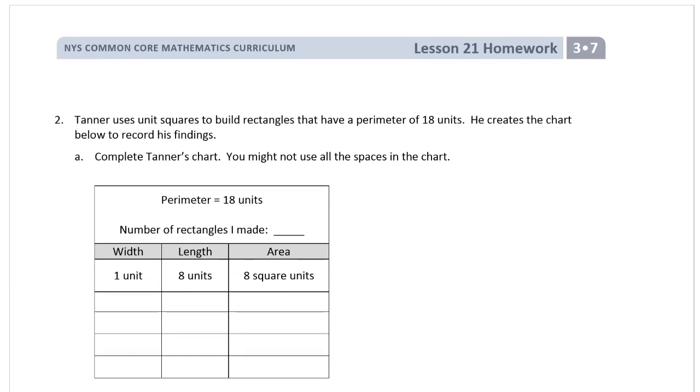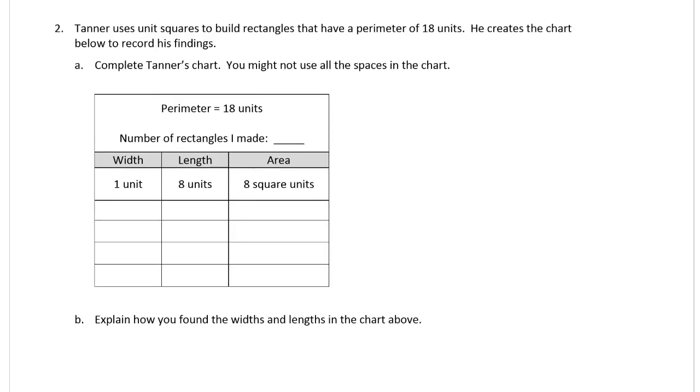Tanner uses unit squares to build rectangles that have a perimeter of 18 units. He creates the chart below to record his findings. Complete his chart. You might not use all the spaces in the chart. So perimeters of 18. So the one that he made was, I'm drawing pictures of it because that's what I have to do to think about it. He used that. So you need lengths and widths that add up to 9, right? Because it's 18. Half of 18 is 9.